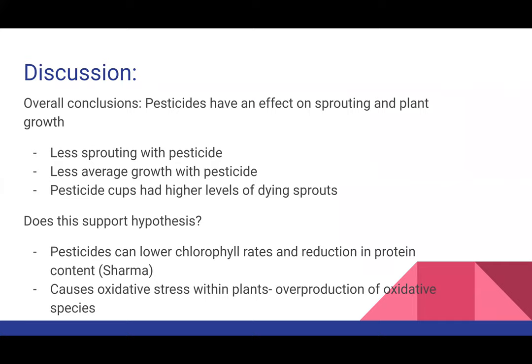Looking at the results and data collected over the eight weeks, I concluded that pesticides do have an effect on sprouting and plant growth. We saw this from pretty much all the data, which showed less sprouting among the cups that had the pesticide additive, less average growth within those cups, and — interestingly — higher levels of dying sprouts in the pesticide cups as the weeks went on.